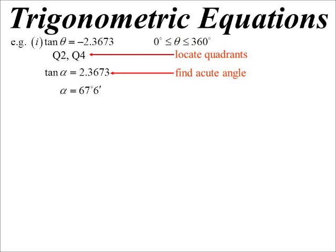And remember, I said in the tables, the only thing that they had there was acute angles. So we work out the acute angle, so we don't worry about the negative. 67 degrees 6 minutes.